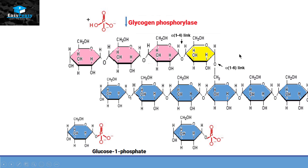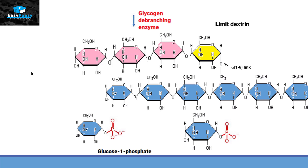Near the branch point, after at least 4 glucose molecules remain, glycogen phosphorylase is unable to remove the remaining glucose molecules with the help of inorganic phosphate. At this point, it reaches the limit dextrin. When we reach the limit dextrin, another enzyme is going to help, called the glycogen debranching enzyme.